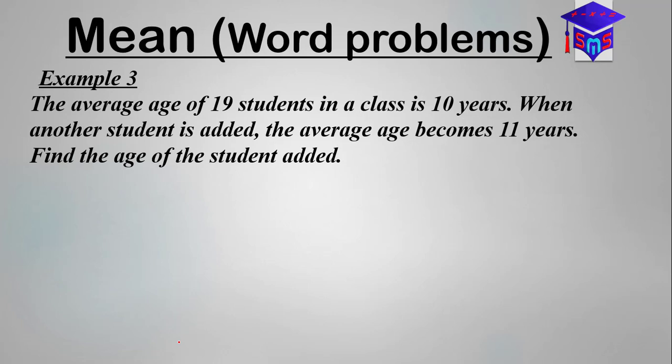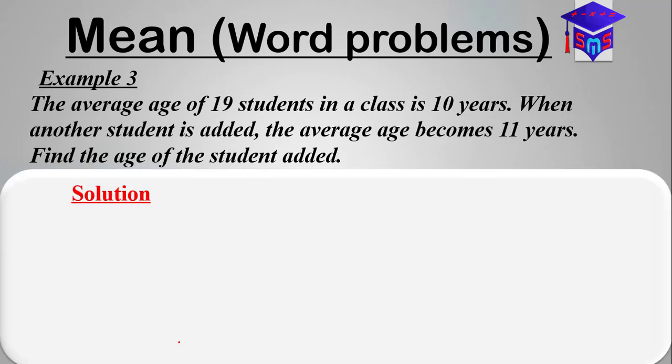So with the assumption we made in the previous video, we said the sum over the n is equal to the average. All right, so if you have a question like this, to be able to answer this question, we first have to find the sum of the ages of the 19 students.